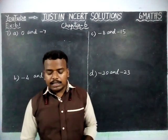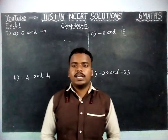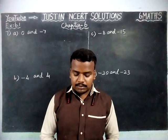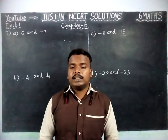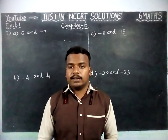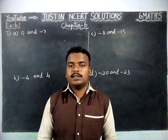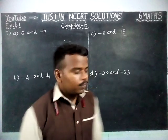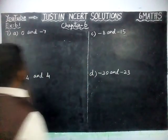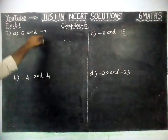Write all the integers between the given pairs. Write them in increasing order. Now, the numbers 0 and minus 7.